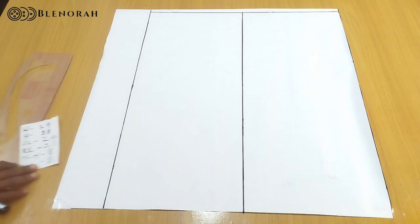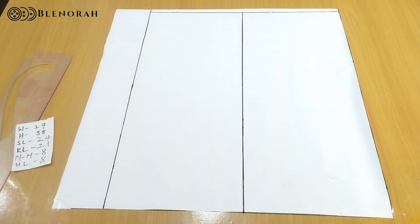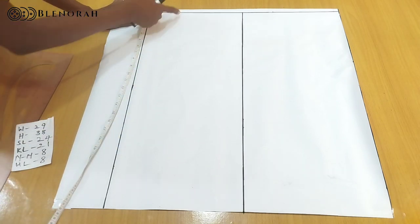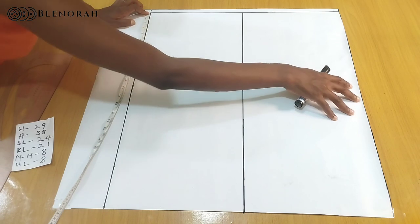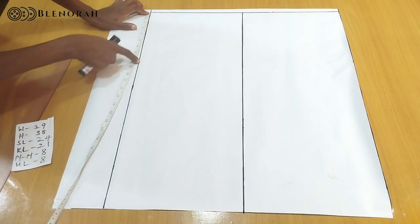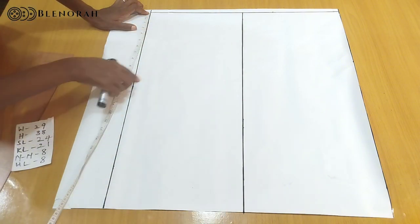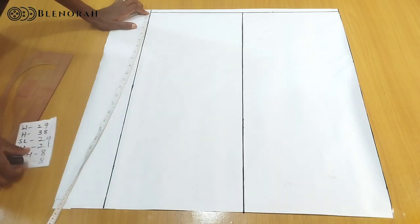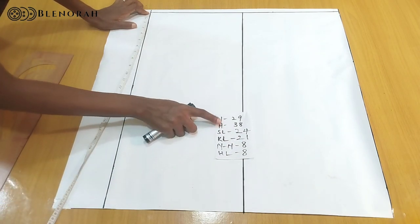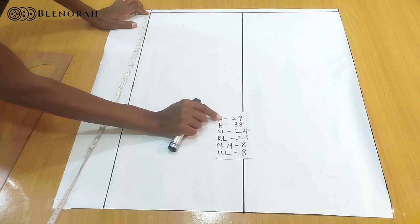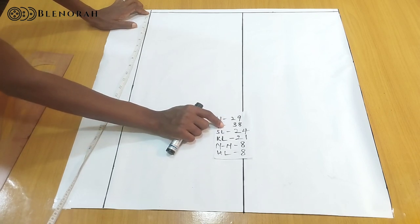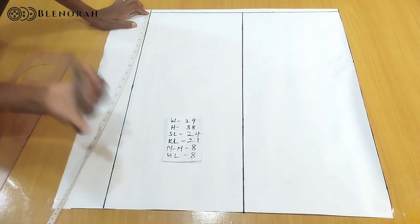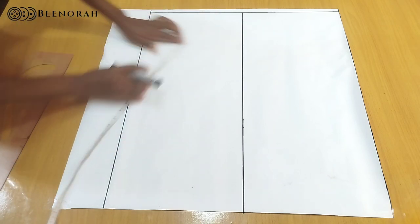The hip line — also called waist to hip — is 8 inches. This is the rectangular box: circumference against the length, horizontal against the vertical. For the circumference, we use the highest measurement which is 38, divide by 2 to get 19, add 2 inches ease, giving us 21.